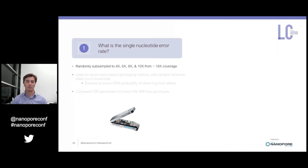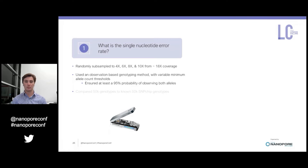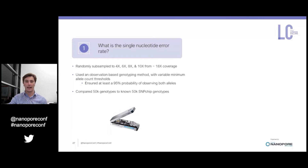To answer our first question we randomly subsampled data from an animal sequenced on a MinION down to four, six, eight, and tenfold coverage. The bovine genome is diploid and approximately three gigabases in size, so this represents 12 to 13 gigabytes of sequence data. We then genotyped 50,000 loci matching the Illumina 50k SNP chip using our own script incorporating a variable minimum allele count. The minimum allele cutoffs ensured at least a 95% probability of observing both genotypes given the coverage and sequencing error rate. We then compared our 50,000 nanopore genotypes to the 50,000 SNP chip genotypes for this animal — considered the true genotypes — and calculated our accuracies.